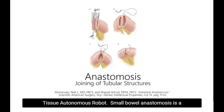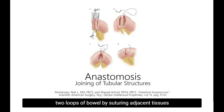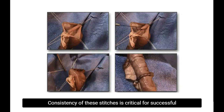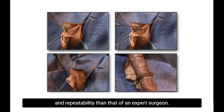Small bowel anastomosis is a procedure performed over a million times each year using manual, laparoscopic, or robotic techniques. During this task, the surgeon stages and reconnects two loops of bowel by suturing adjacent tissues using either running or interrupted stitch. Consistency of these stitches is critical for successful anastomosis, as even a single missed stitch can result in leak with catastrophic complications. Autonomous robotic suturing can complete this task with more consistency and repeatability than that of an expert surgeon.